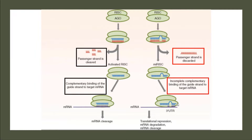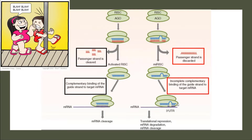So these two RNAs are just like sisters. One sister is clumsy as it cannot completely bind itself to the mRNA, while the other sister is sophisticated as it can completely bind to the mRNA and halt the process of translation.